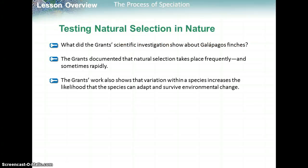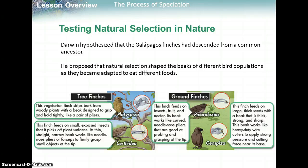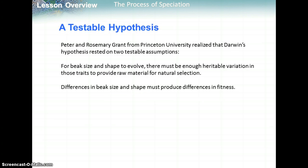Now we're looking at testing natural selection, going back to that Grant study. Darwin hypothesized that the Galápagos finches had descended from a common ancestor and proposed that natural selection shaped the beaks of different bird populations as they became adapted to eat different foods — tree finches strip bark, ground finches eat small or larger seeds. Peter and Rosemary Grant from Princeton realized that Darwin's hypothesis rested on two testable assumptions: there must be enough heritable variation in beak traits, and differences in beak size and shape must produce differences in fitness.